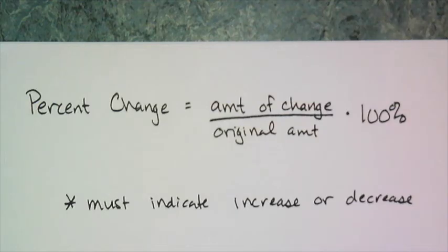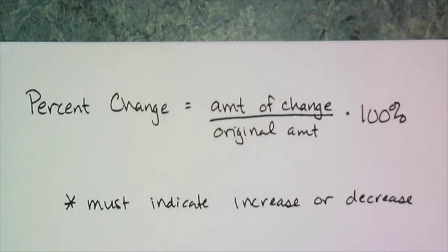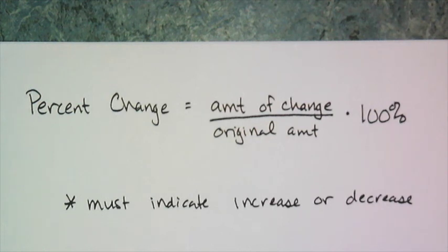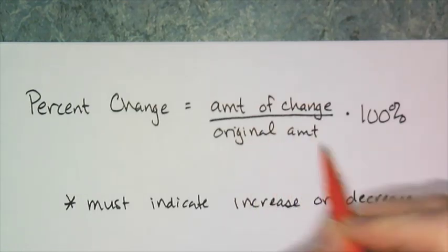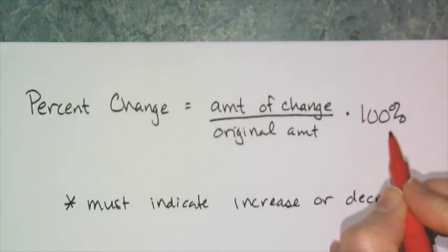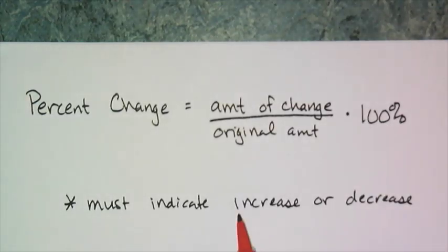In this lesson we're going to apply exponential growth to personal finances. Before we do that, we're going to talk about percent change. It's not really exponential growth, but it shows up in personal finance — you hear that an investment increased by a certain percent, or a stock went down by a certain percent. The formula: take the amount of change, divide it by the original amount, and multiply by 100 to make it a percentage.